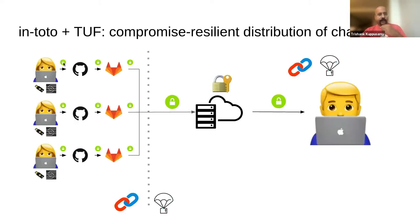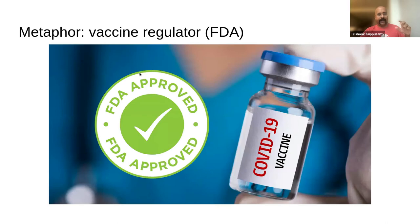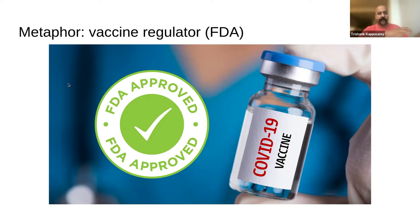Let's talk about the second piece of the puzzle: compromise-resilient distribution of the software supply chains — the In-toto supply chains. TUF is a secure transfer protocol that distributes all of the supply chains as well as the artifacts. Going back to the vaccine metaphor, TUF is like the FDA telling you why you should trust Pfizer, Moderna, or J&J in the first place. You have one central root of trust, and from there you can bootstrap and figure out your way through the rest of the system.